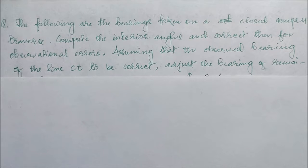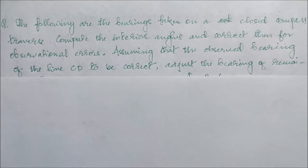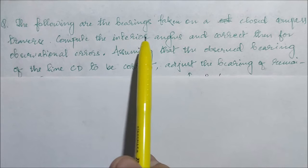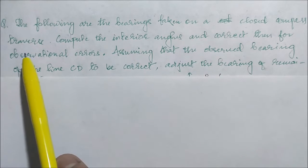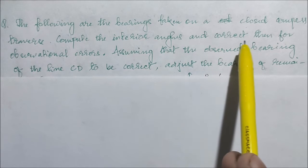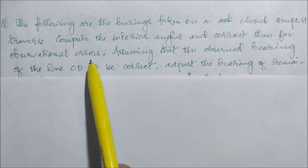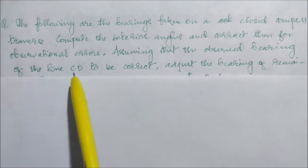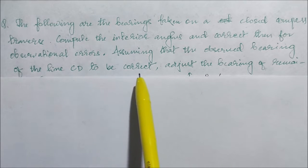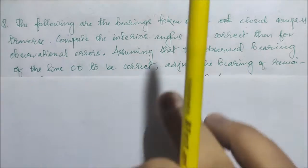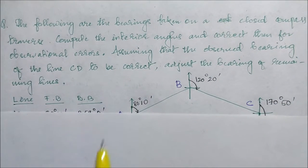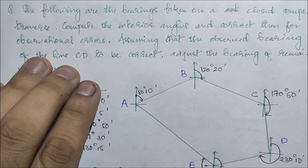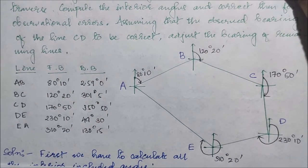Hello everyone, today we are going to discuss a problem based on the method of elimination of local attraction in traversing. The following are the bearings taken on a closed compass traverse. Compute the interior angles and correct them for observational errors, assuming that the observed bearings of the line CD are correct. Adjust the bearings of the remaining lines.